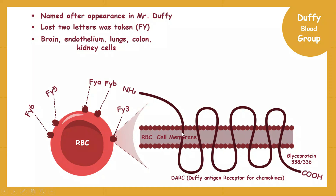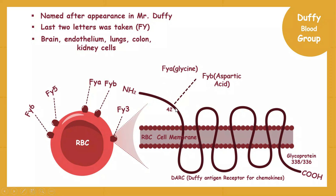Now let's discuss where FYA and FYB antigens are located on this glycoprotein. Amino acid number 42 decides which type of antigen will be expressed. If glycine is at position 42, FYA antigen will be present. If aspartic acid is at position 42, FYB antigen will be present. Remember, this single amino acid is not the whole antigen, but it determines whether it is FYA or FYB on the Duffy glycoprotein.